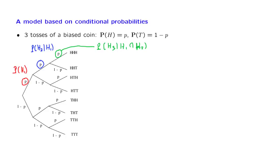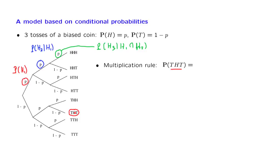Let us now continue with some calculations. First, we practice the multiplication rule, which allows us to calculate the probability of a certain outcome. The outcome of interest is tails followed by heads followed by tails. According to the multiplication rule, to find the probability of a particular final outcome, we multiply probabilities and conditional probabilities along the path leading to that outcome. In this case, it's (1 minus p) times p times (1 minus p).